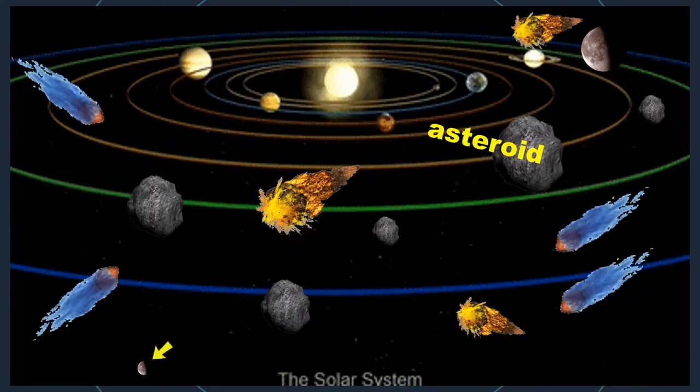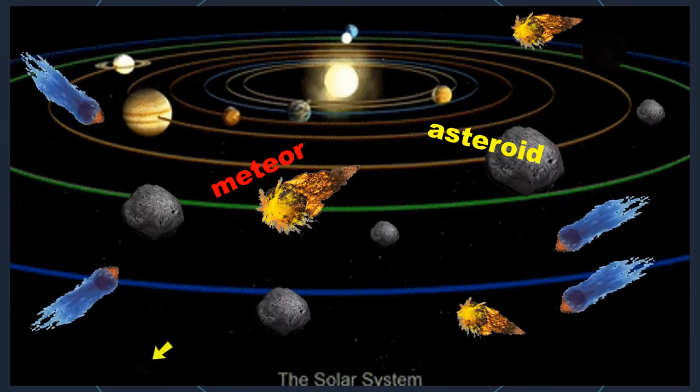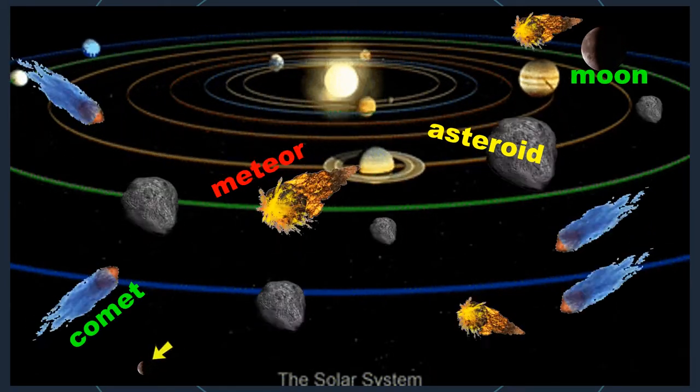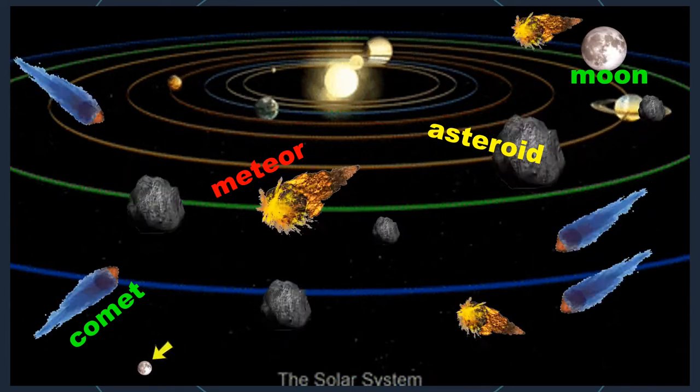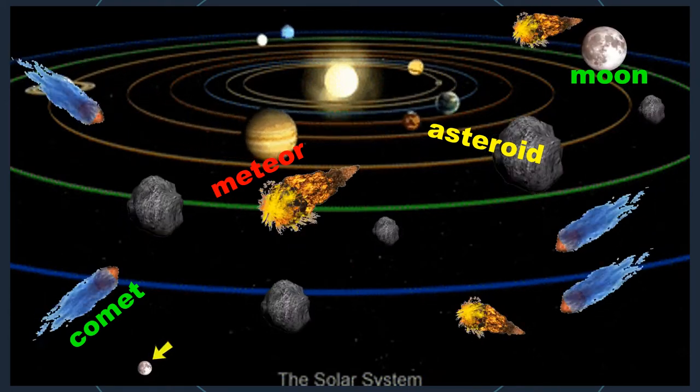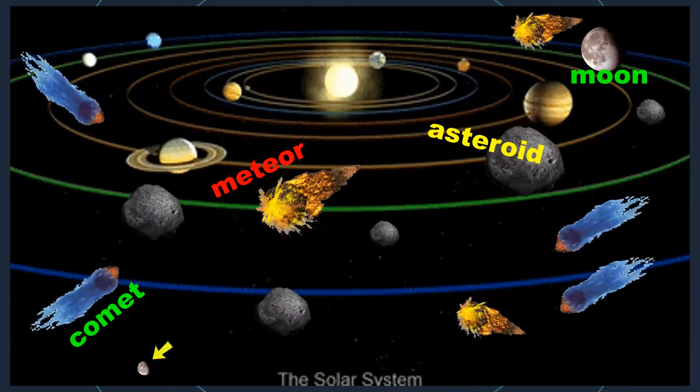Look at the objects that appear in your screen. They are asteroids, meteors, comets, and moon. Let's include the dwarf planet there. These are some of the objects that orbit around the Sun. Now let's talk about them one by one.